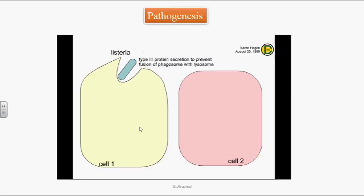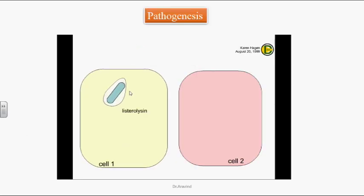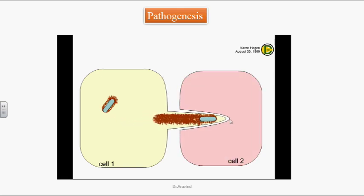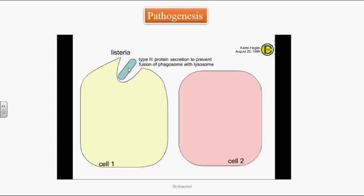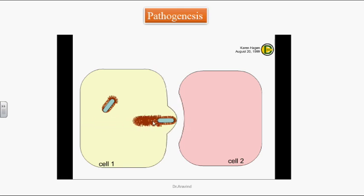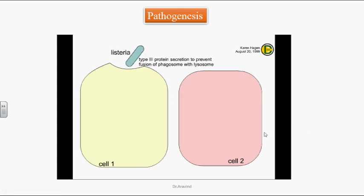In the pathogenesis animation, the Listeria organism enters into the cell and activates the actin molecules. The actin molecule pushes the Listeria into the next cell. With the help of phospholipase they break the membrane. Listeriolysin O breaks the membrane, and Act A activates the actin molecules, repeating this process from one cell to the next.